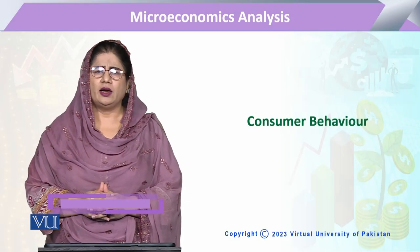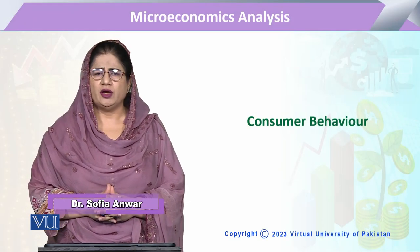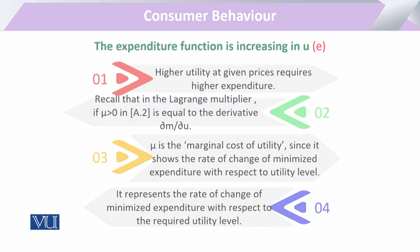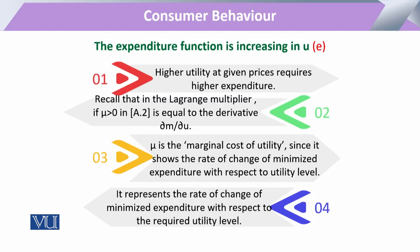Module 99 under the chapter of consumer behavior. The topic is expenditure function properties. This property is: the expenditure function is increasing in utility, as we have shown with respect to the given expenditure. Whenever there is any type of commodity expenditure, it has to be particularly attached with certain commodity quantities.